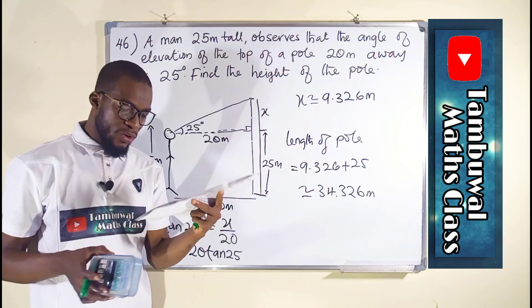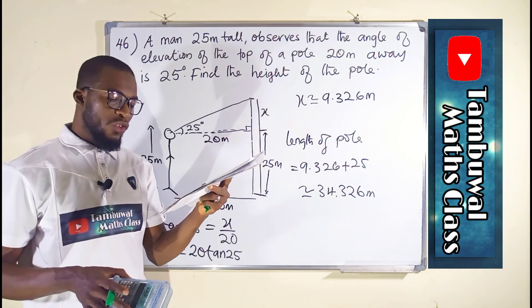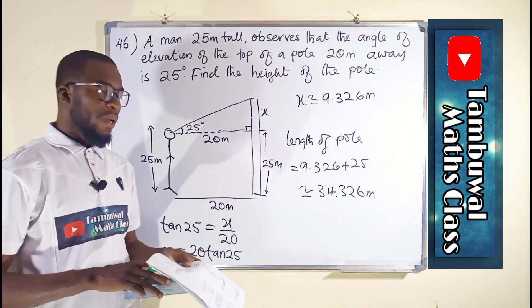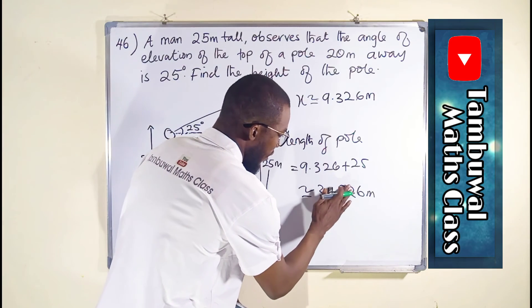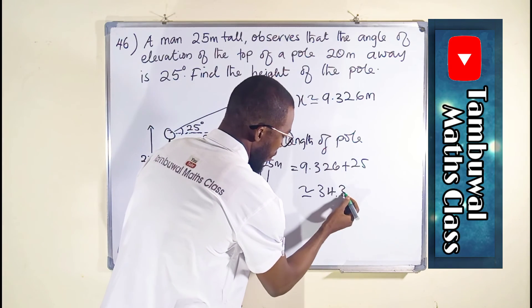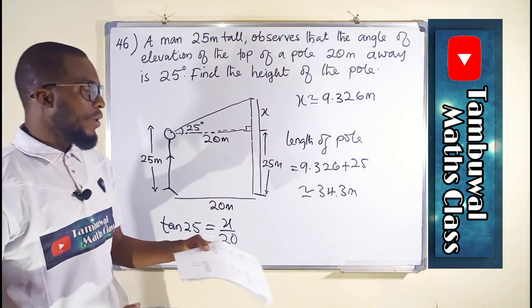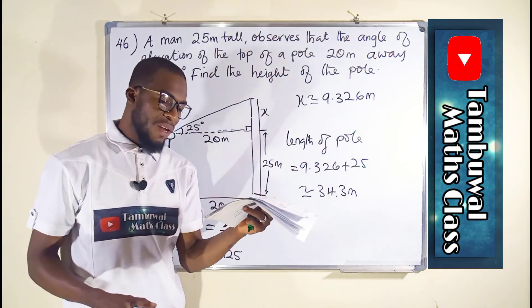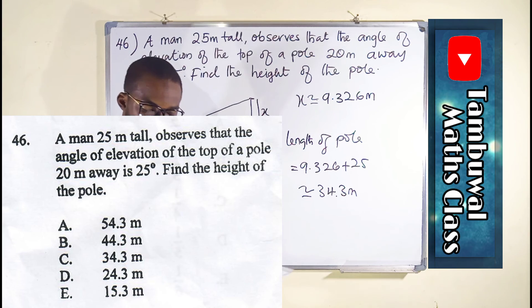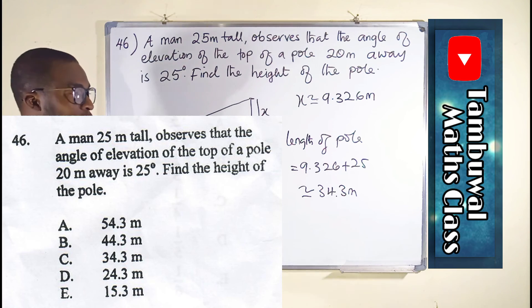So now let us look at the options. All the options are rounded to 1 decimal place. So we can take this away. We have 34.3 meters. And we have it as option C here. So now let us move on to question number 47.